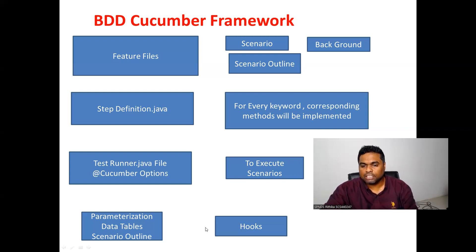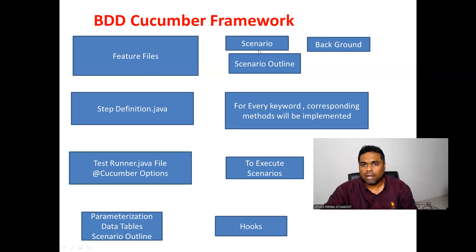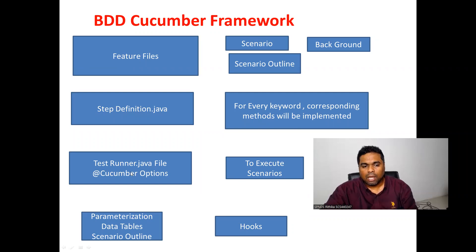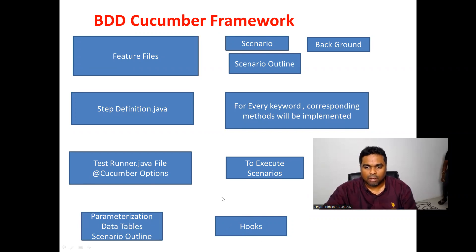Hooks contain a common snippet of code that is globally executed before and after scenarios. When explaining the BDD Cucumber framework in interviews, you should cover: feature files with scenario, scenario outline, and background sections; StepDefinition.java; TestRunner.java and @CucumberOptions; parameterization using data tables and scenario outline; and finally the hooks concept. Thank you everyone — that's it for BDD Cucumber framework.